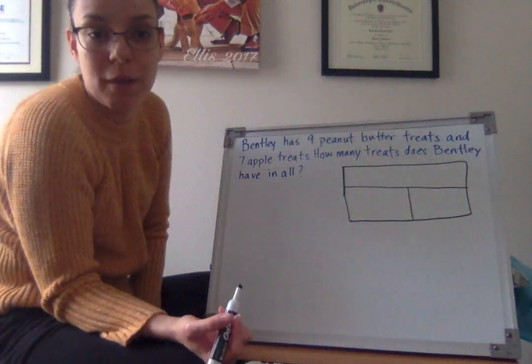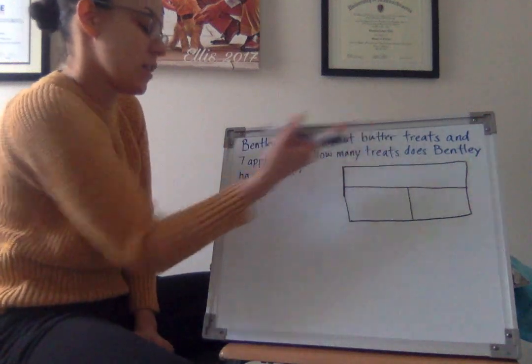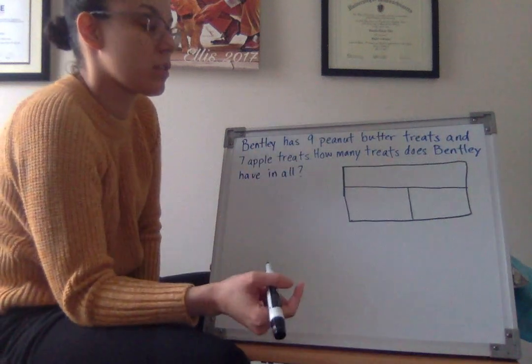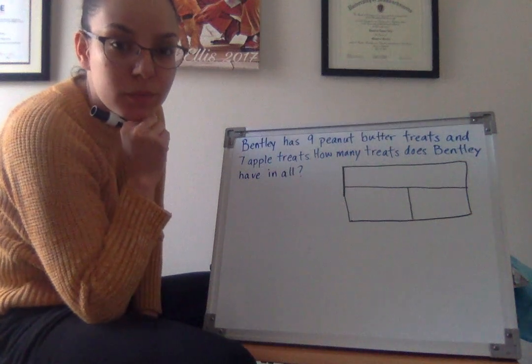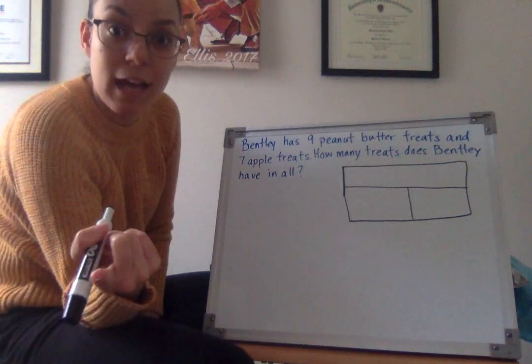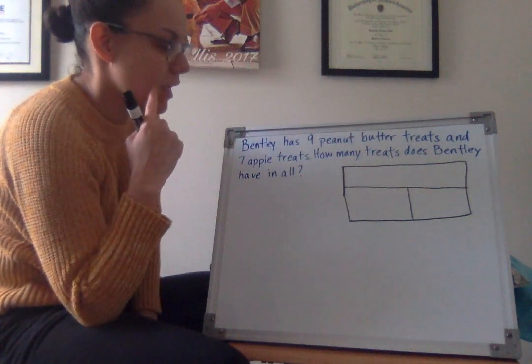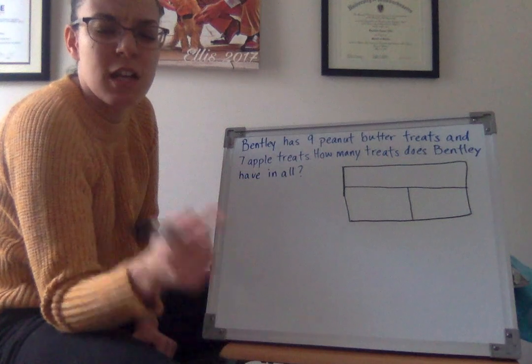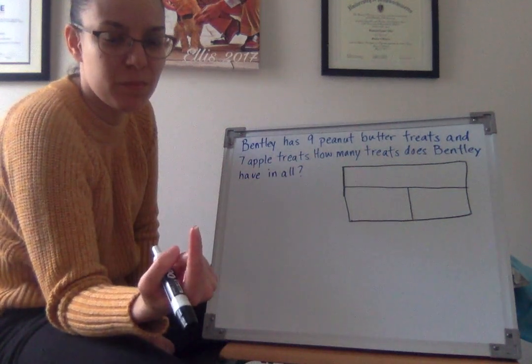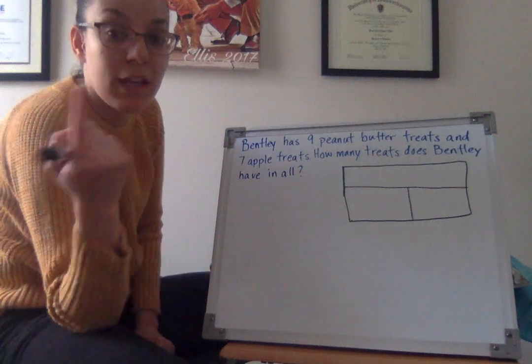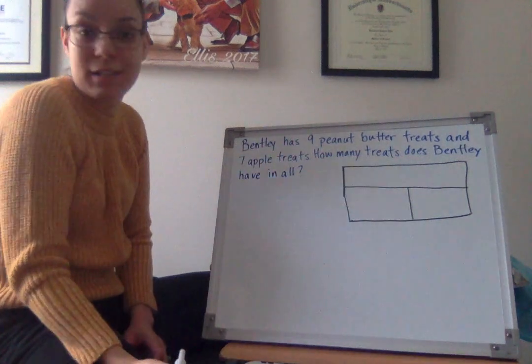Now let me reread the problem and see what I already know. Bentley has nine peanut butter treats and seven apple treats. So what's one thing that we know from me reading that problem? Yeah, he has nine peanut butter treats. Okay, now I need to think, hmm, I thought it was nine peanut butter treats. Is that a part? Or is that how many he has in total altogether? Yeah, I heard some people say it's a part. How do you know that nine is just a part and not the total?